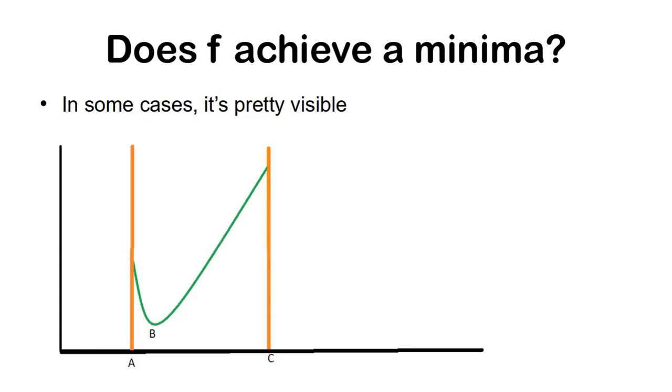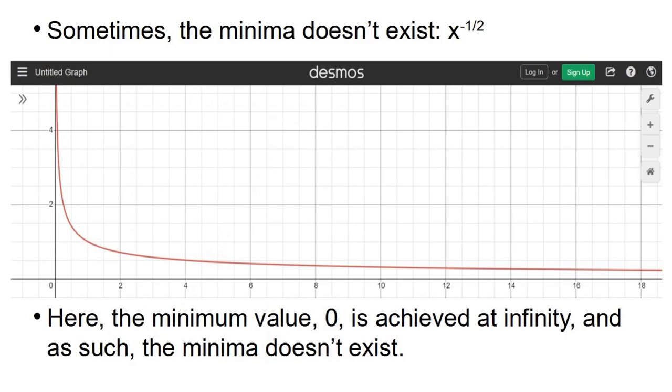Some functions such as 1 over root x don't have a minima. Over here no matter how far you go the function keeps decreasing. It tends to zero but it never actually reaches zero, and no matter how far out you go, the point on your left is going to have a higher value and the point on the right is going to have a lower value, and as such the minima doesn't really exist.